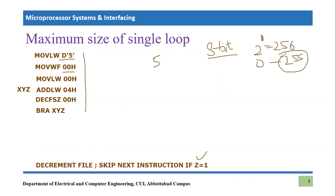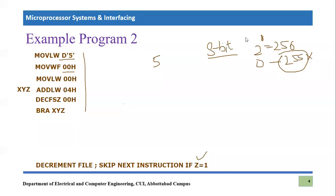This brings us to another problem: what if we want to repeat certain instructions more than 255 times? We cannot exceed this number in a single loop, so we need a technique to increase the size of the loop or the number of iterations. The solution to this problem is the nested loop.